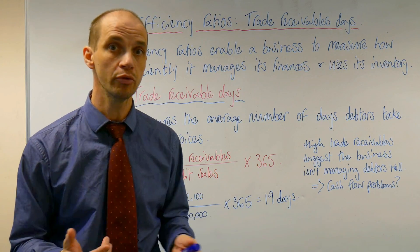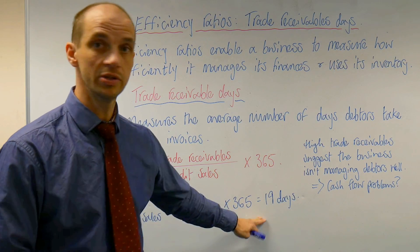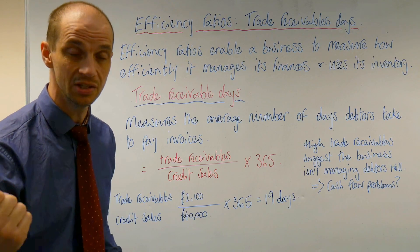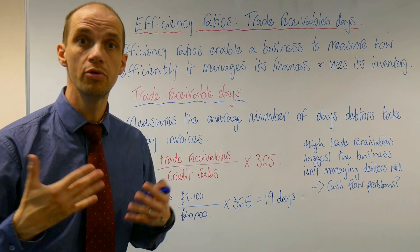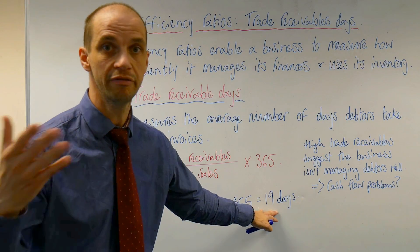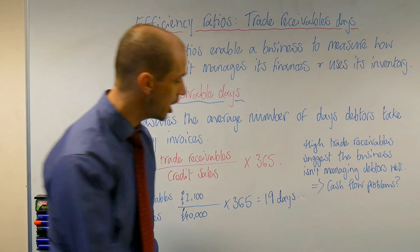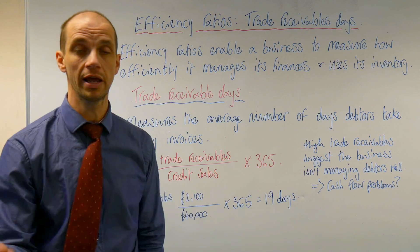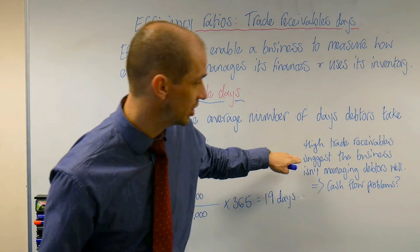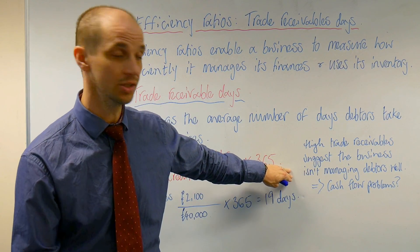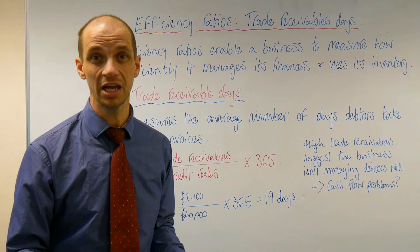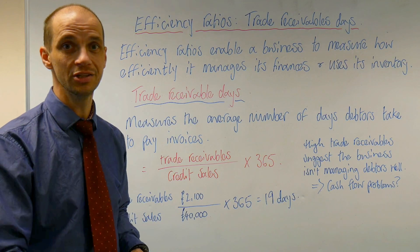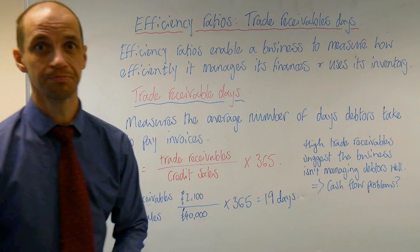If the industry average is 28 days, this 19-day result suggests the business is managing its cash flow quite nicely and chasing down its debtors effectively — no cause for concern. However, if the average payment terms were 7 days, this would reflect quite poorly. High trade receivable days suggest the business isn't managing its debtors well and may suffer from cash flow problems. We'll build on these points in the next video.